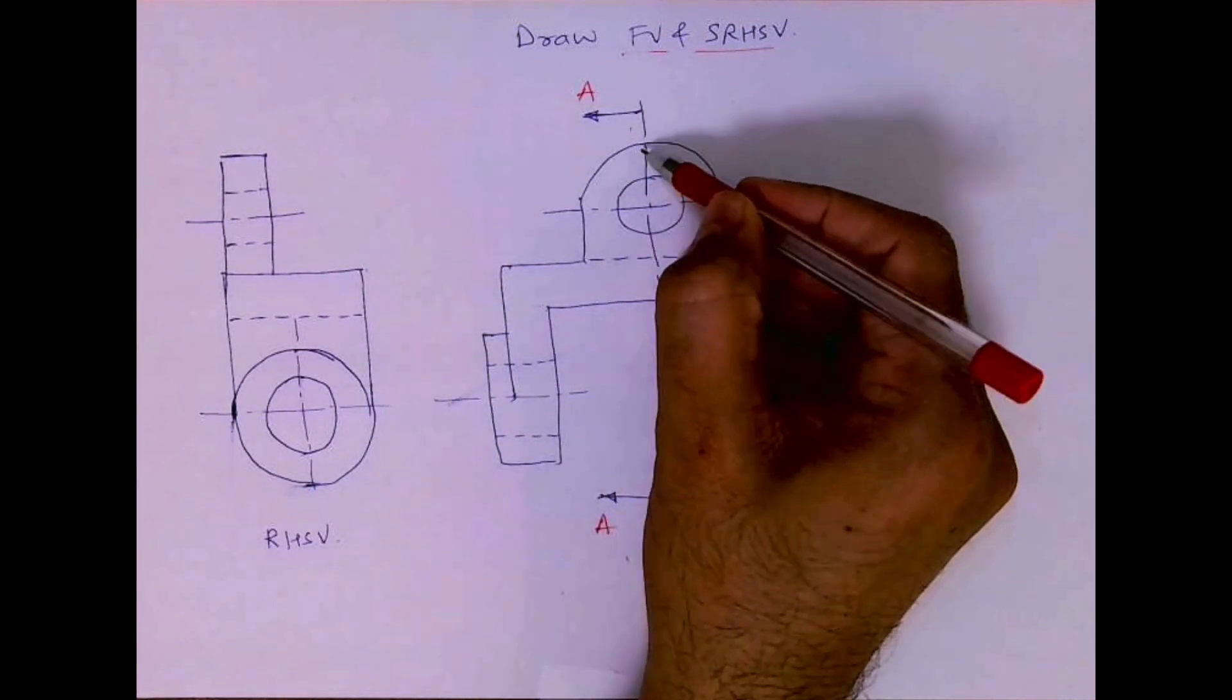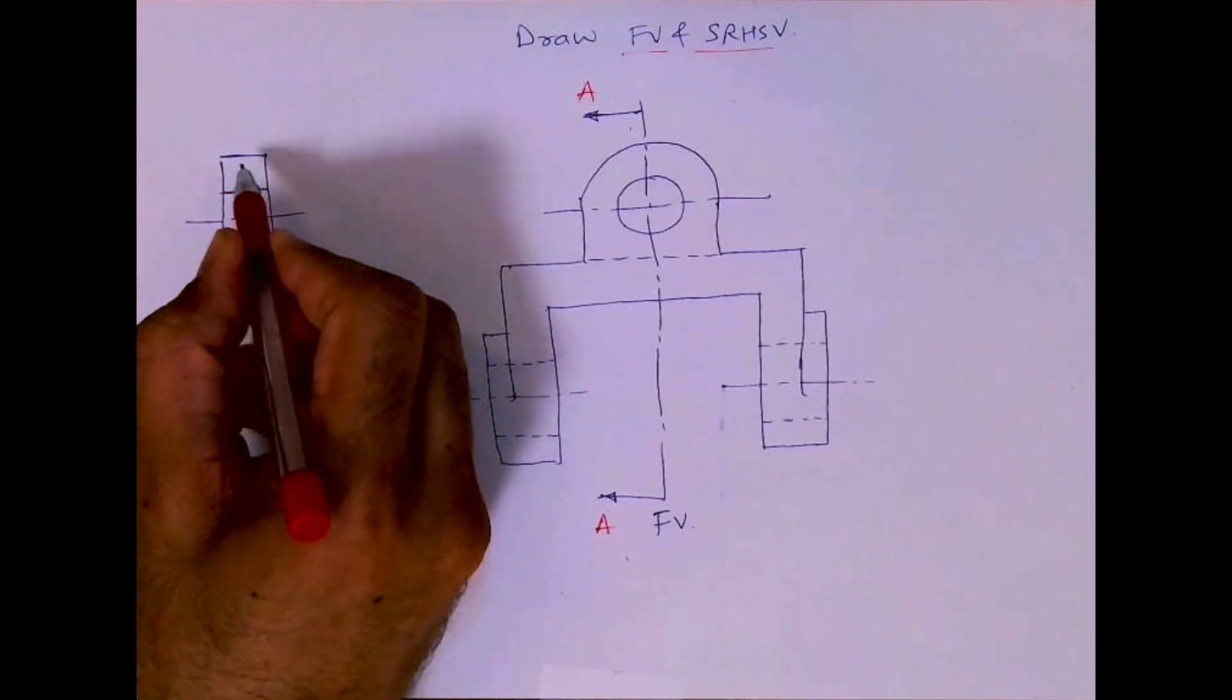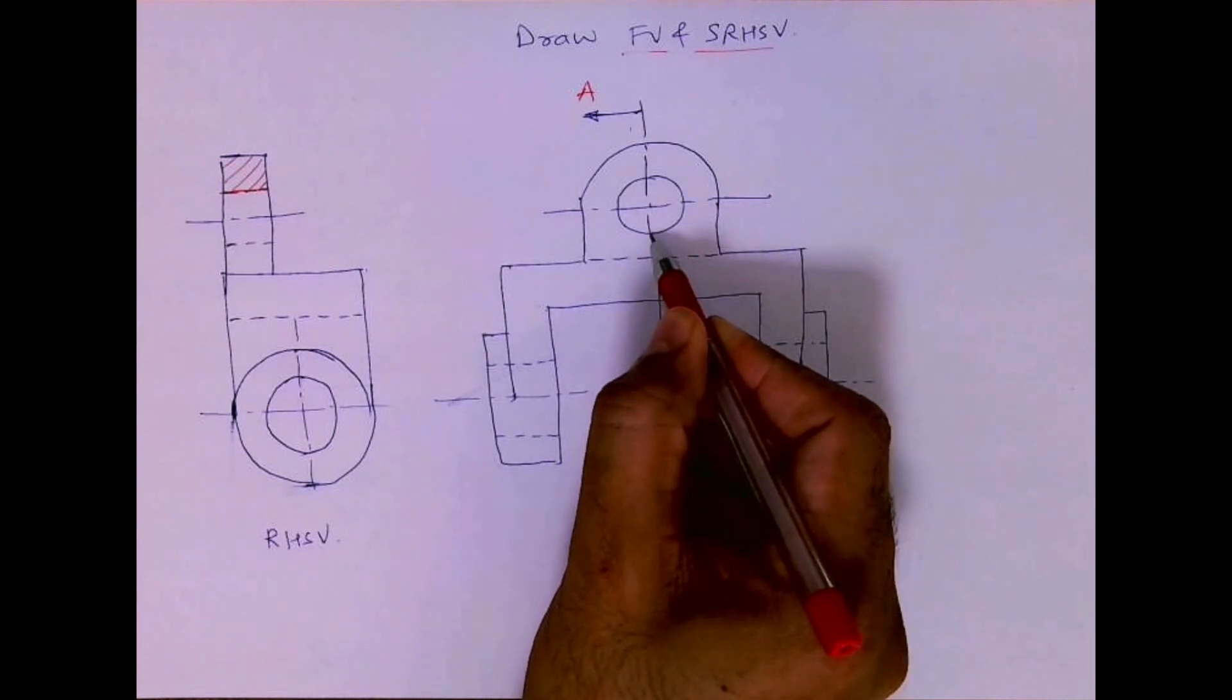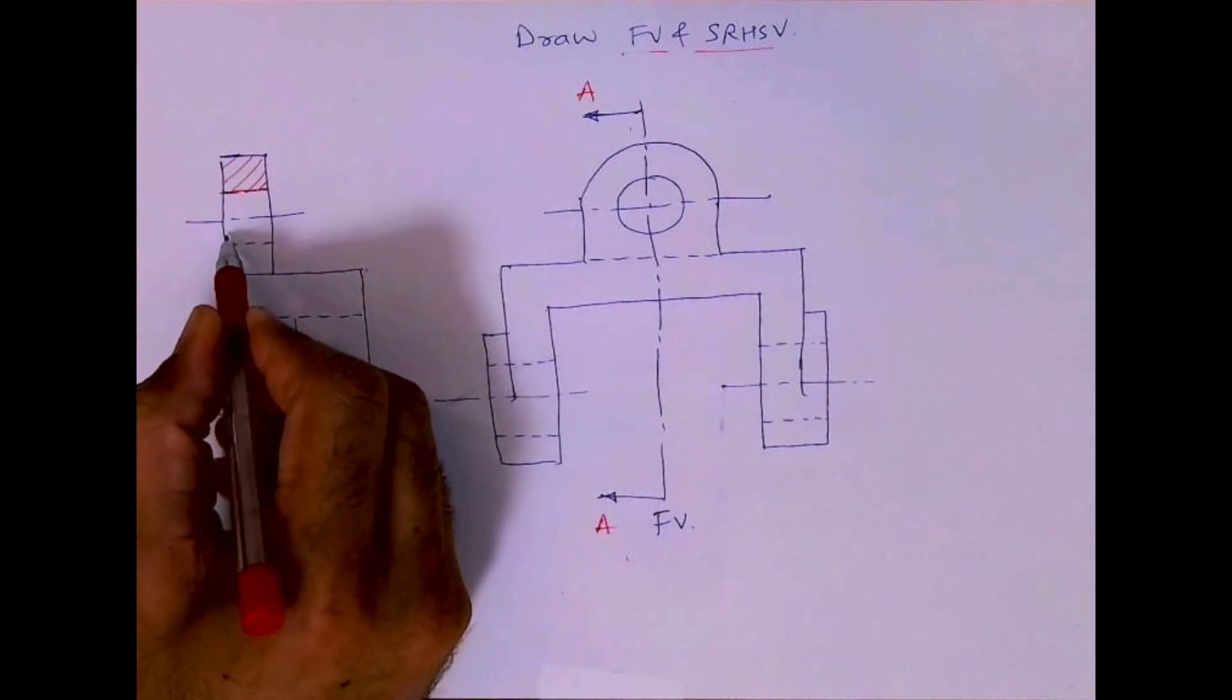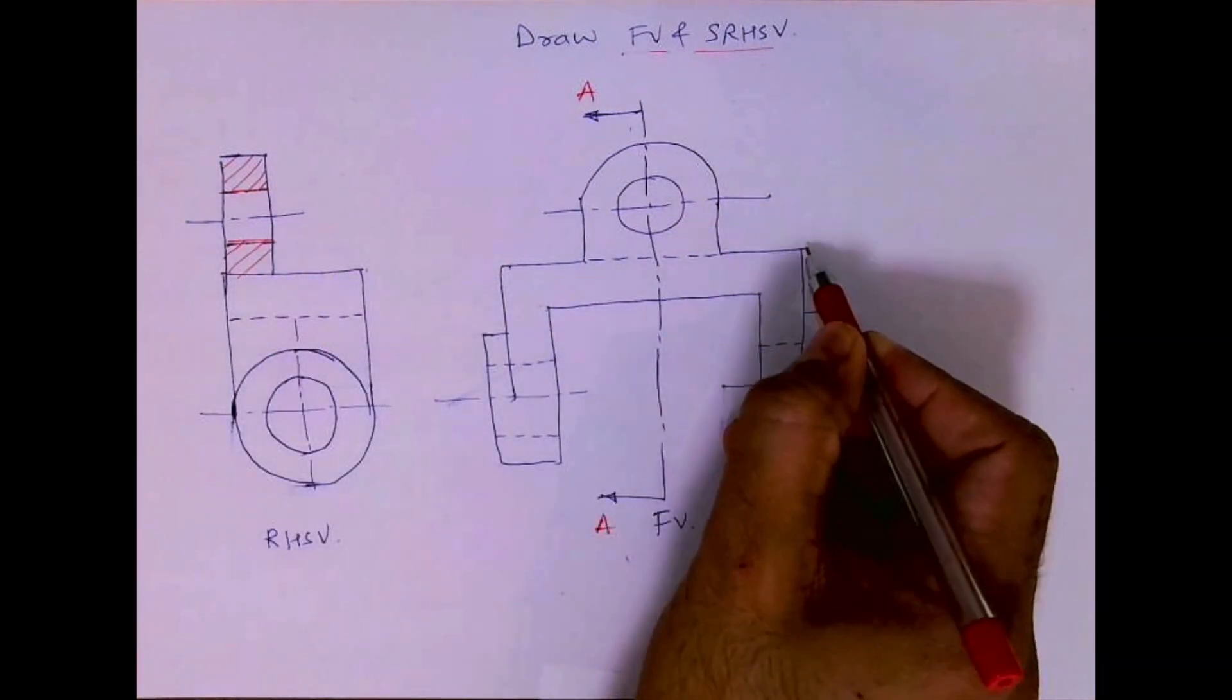This is a cut plane line. It is cutting over here, so this will be dark. This will be hatched over here. We are not cutting anything now. This will be dab.